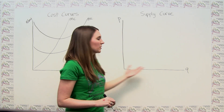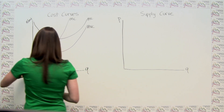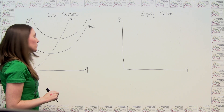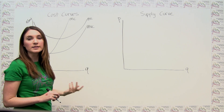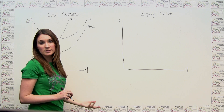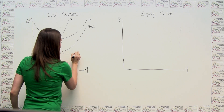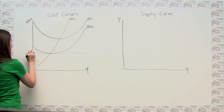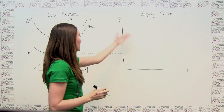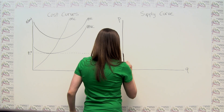Let's start by thinking about a very low hypothetical price and what happens to quantity supplied as we keep increasing that price. At a very low price, the firm isn't going to want to produce any output, because the shutdown condition states that if the price is below the minimum of average variable cost, the firm is going to shut down and produce zero. So for all prices up until this minimum of average variable cost — let's call this P1 star — the firm produces a quantity of zero.